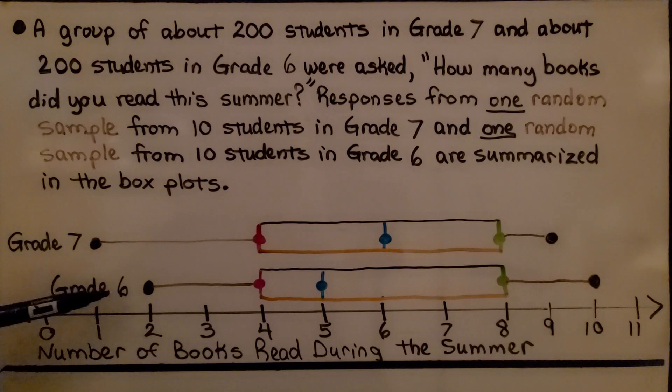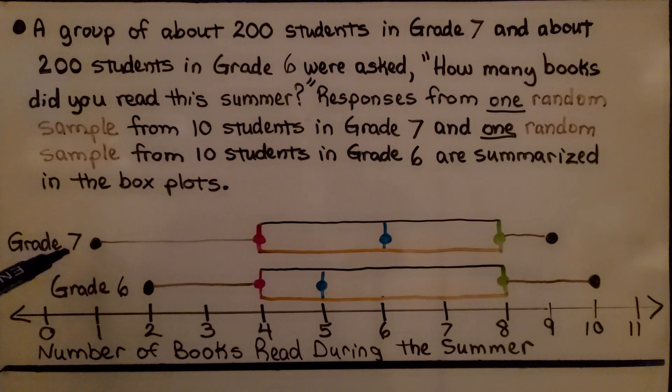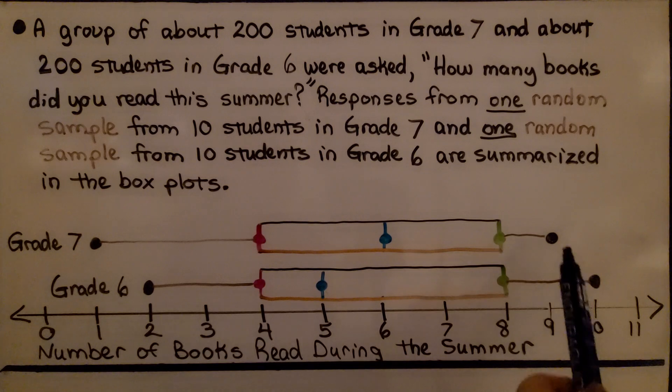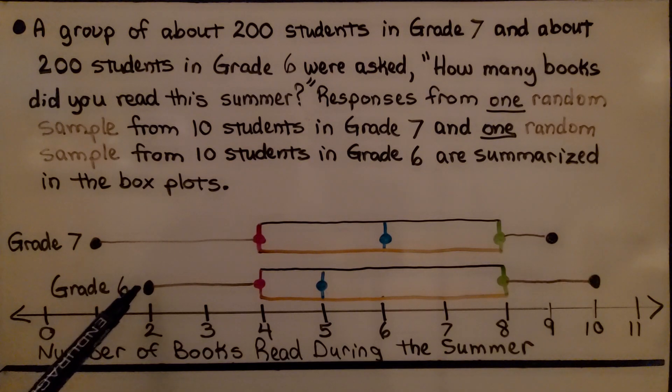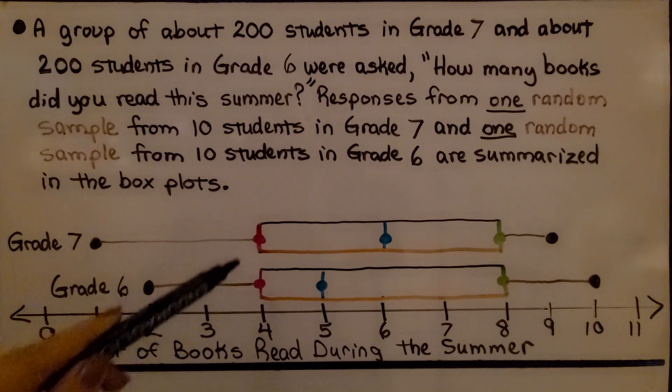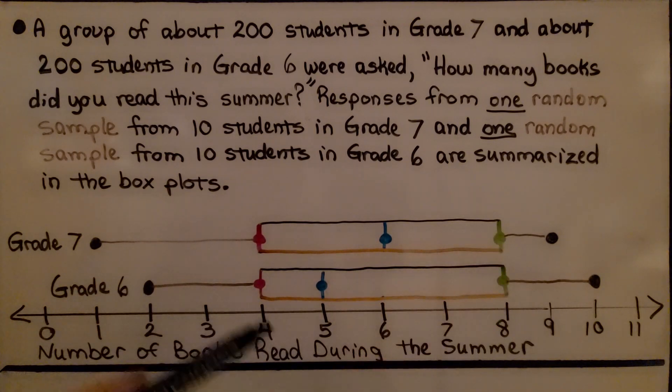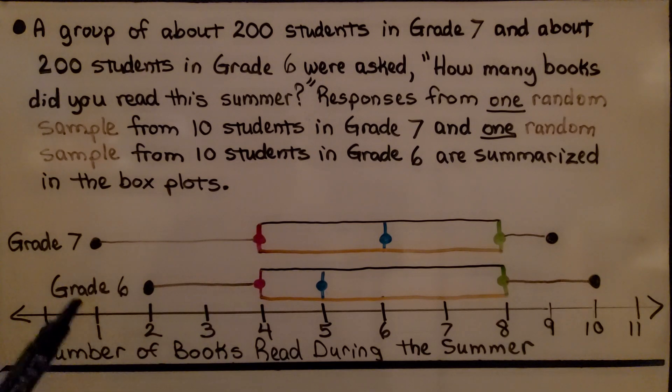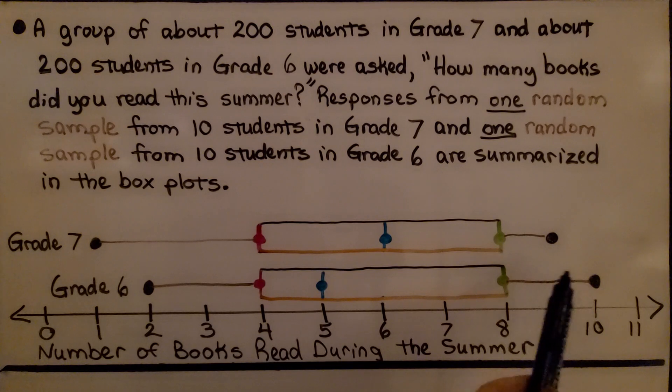So here's grade 7 and here's grade 6. It's the number of books that they read during the summer. We can see that for grade 7, somebody just read one book. Someone read 9. For grade 6, someone read 2. Someone read 10. And we can see the boxes are the same length. They're kind of shaped the same. They're a little shorter whiskers on this side, a little longer whiskers on this side.